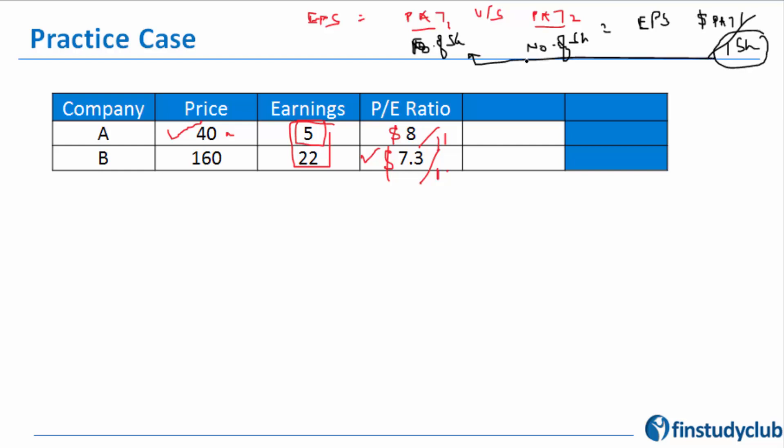Then we suddenly get a parameter called earnings per share, which is the dollar PAT per one share. Whatever is a differentiating parameter is taken in the denominator and is therefore made one. This is exactly the point here—earnings is a differentiating parameter, and I've made that as one.